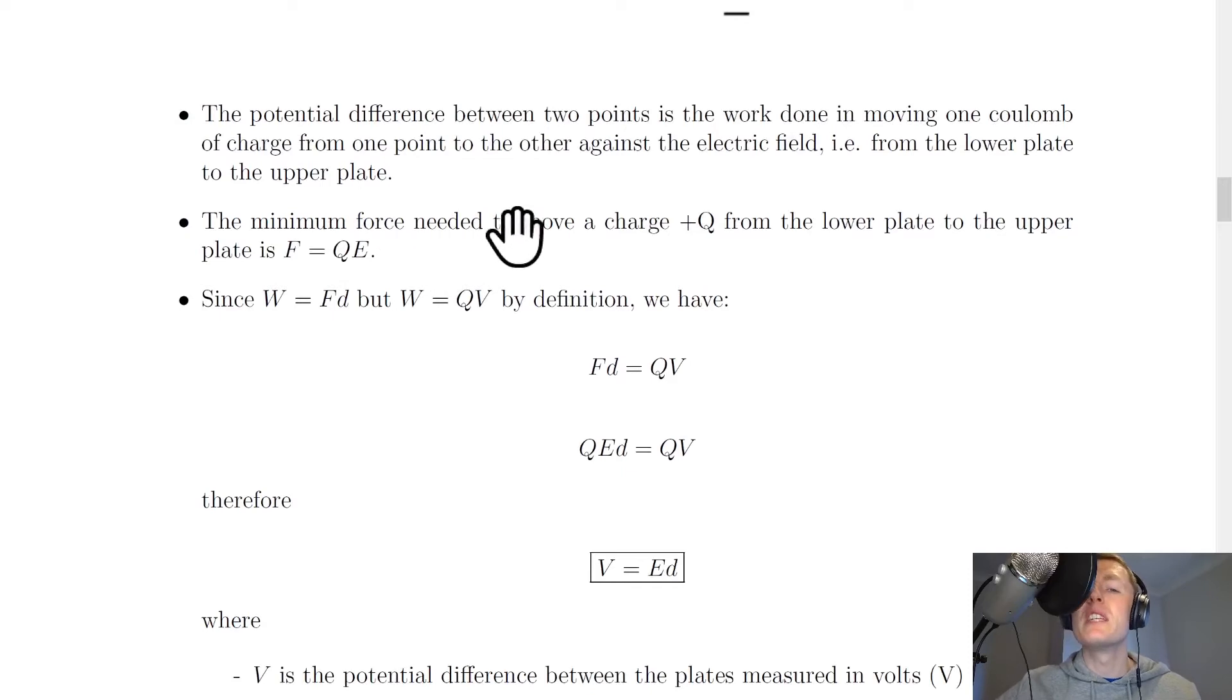It then says that the minimum force needed to move a charge plus q from the lower plate to the upper plate is f equals qe. And we've already seen this equation when we looked at the definition for electric field strength.